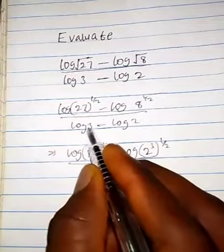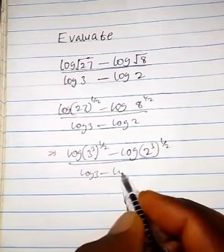So we have everything over log 3 minus log 2.